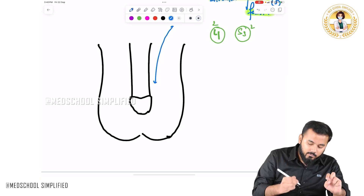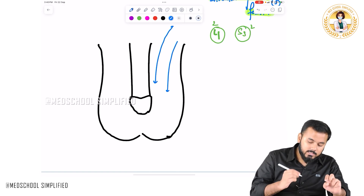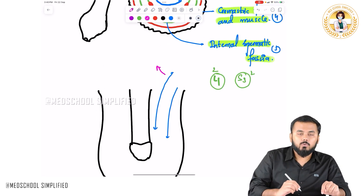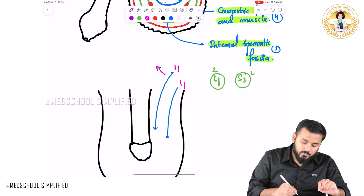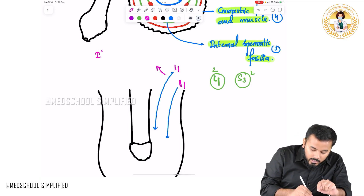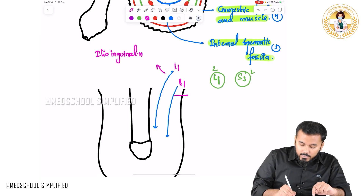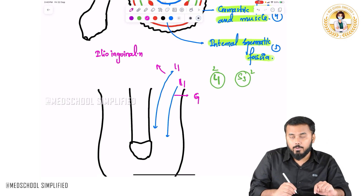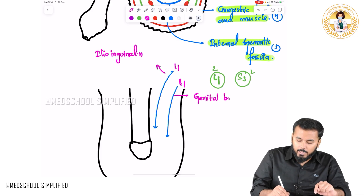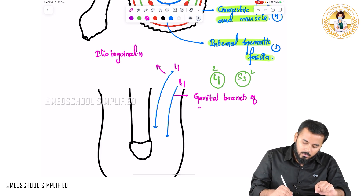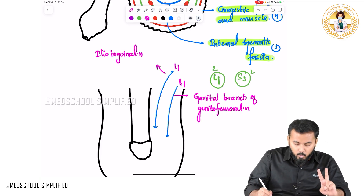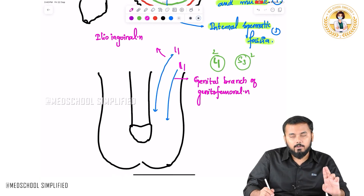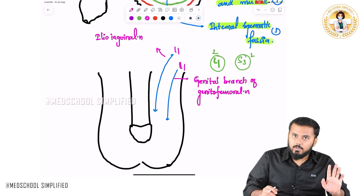The first branch is located superiorly and is called the ilioinguinal nerve, coming from L1. The second L1 branch is called the genital branch of the genitofemoral nerve. So the two L1 branches are: the ilioinguinal nerve and the genital branch of the genitofemoral nerve.